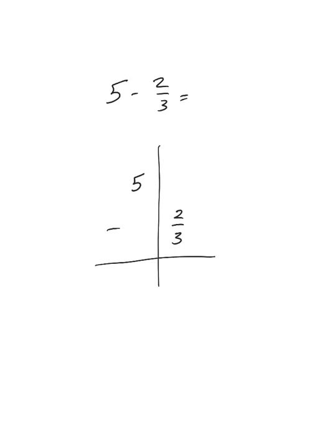I'm going to think of the five as the same thing as four plus one whole. Then I'm going to take that one whole and move it into the fraction column. When I move it into the fraction column, it takes the name of the fraction, which in this case is thirds. So one whole is equal to three-thirds. What I really just did is take one whole away from five wholes, move that whole over to the fraction column and made it three-thirds. So what I really have is four and three-thirds, which is the same thing as five wholes minus two-thirds.